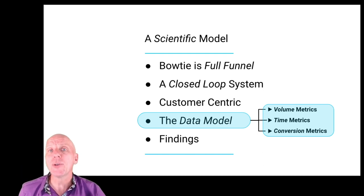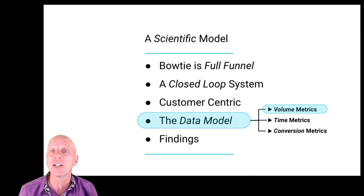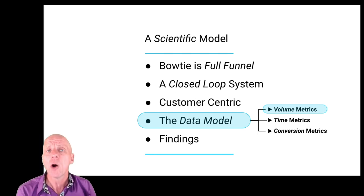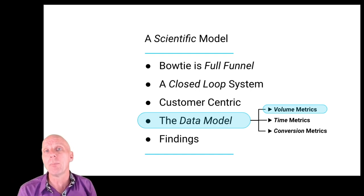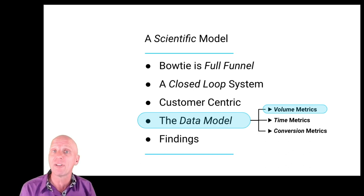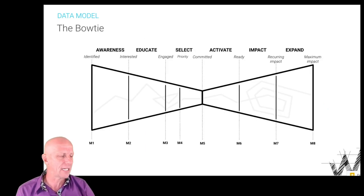I'm going to step you through three different metrics, starting with the first: volume metrics. Volume metrics are things we measure in volume — how many leads do we have, how many opportunities are in the pipeline, how much revenue, what is the total weighted pipeline, how many seats do we have active, how many customers did we onboard last week. One of the most common volume metrics is how much recurring revenue: MRR, monthly recurring revenue, or ARR, annual recurring revenue.